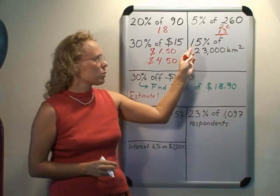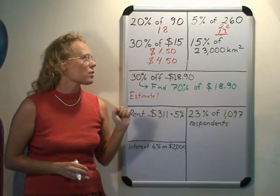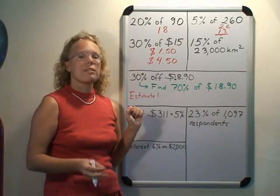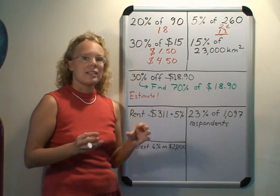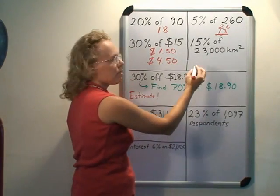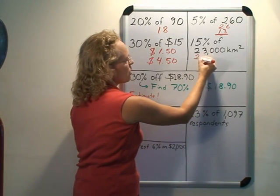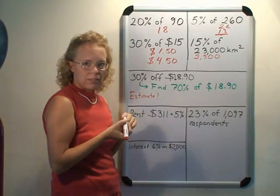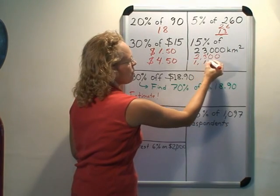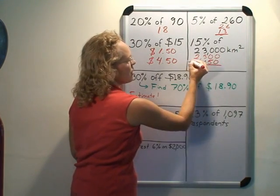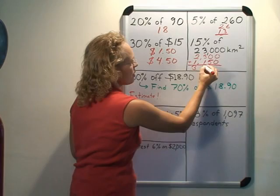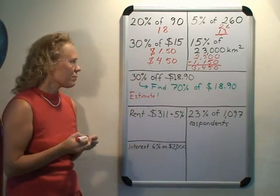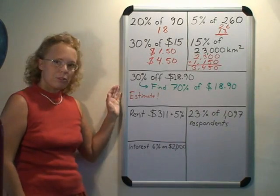15% of 23,000 square kilometers: we find 10% and then 5% and add them. 10% of this number is 2,300, and 5% is half of that, which is 1,150. Adding them gives 3,450 square kilometers.